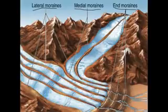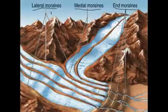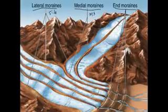An end moraine usually marks the terminus of a glacier. When you want to know how far a glacier extended, you find the end moraine — it shows the furthest extent of the glacier. To review: lateral moraines are on the sides, medial moraines are in the middle, and end moraines mark the terminus of the glacier.